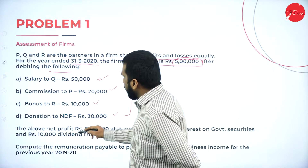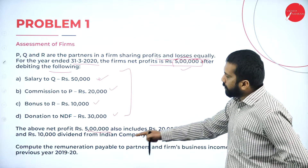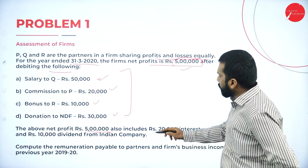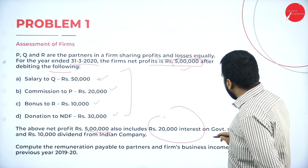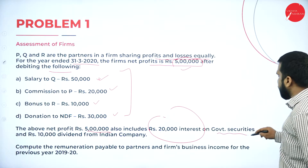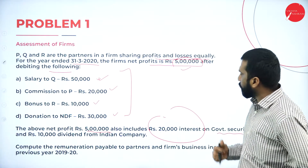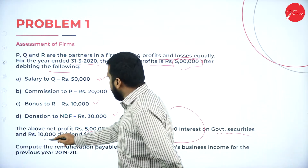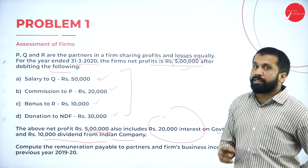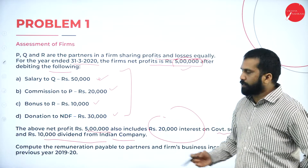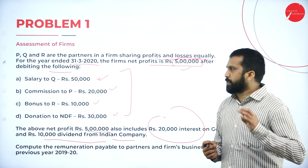The above net profit of 5 lakh also includes: rupees 20,000 interest earned on government securities, and 10,000 dividend from an Indian company. Both are exempted. Dividend is also exempted up to a 10 lakh limit. We are required to compute the remuneration payable to the partners and the firm's business income for the previous year 2019-20.